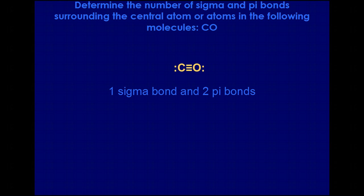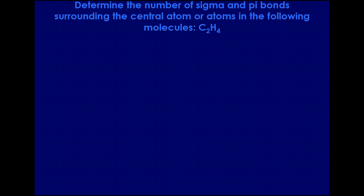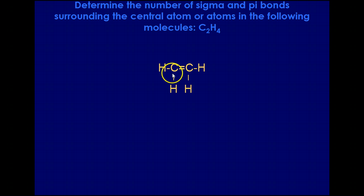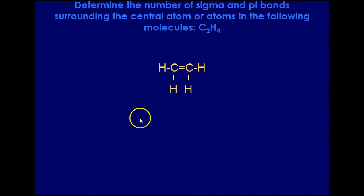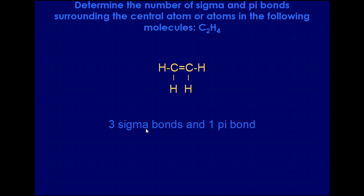For C2H4, each carbon has a double bond between the two carbon atoms and single bonds to the two hydrogen atoms. We have one sigma for the double bond, and then one sigma for each of the carbon-hydrogen bonds, so that's three sigma bonds total, and one pi bond for the multiple bond.